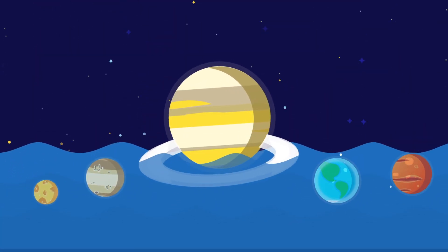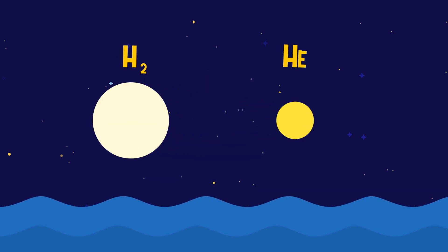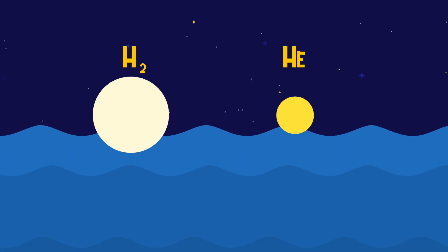If you could put Saturn into water, it would float to the surface, because hydrogen and helium, which make up a large part of the planet, are lighter than water.